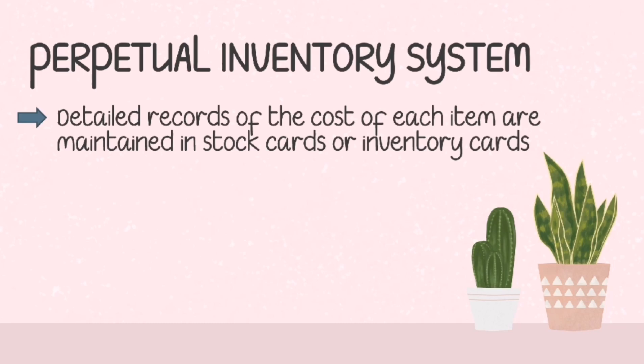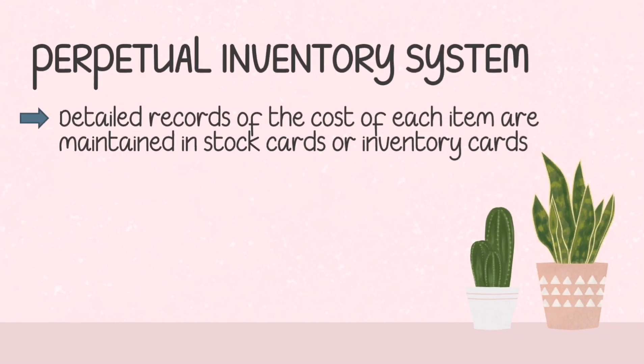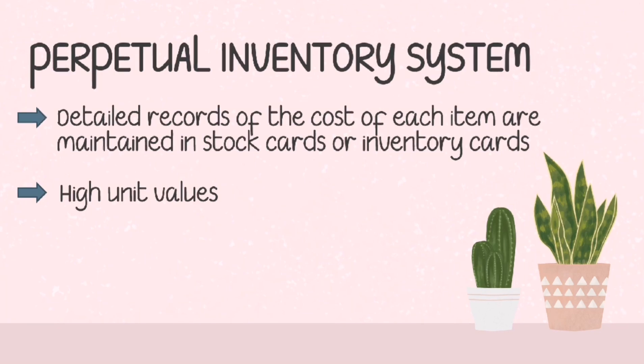Unlike the periodic system, in the perpetual system, the cost of each item sold is determined from the records when the sale occurs. Also unlike the periodic inventory system, the perpetual system is used by businesses which sell high unit values — inventory items that represent a relatively large amount of peso investment.